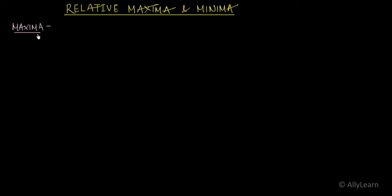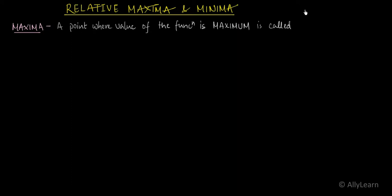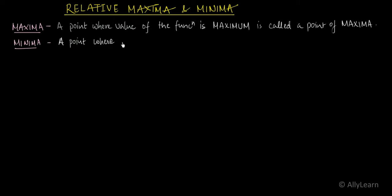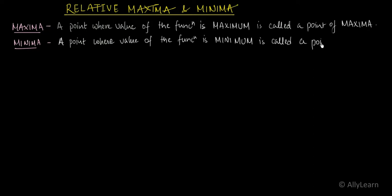Maxima is a point where the value of a function is maximum — a point where the value of the function is maximum is called a point of maxima. A point where the value of the function is minimum is called a point of minima.